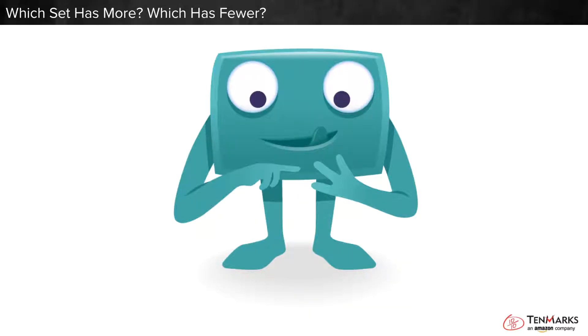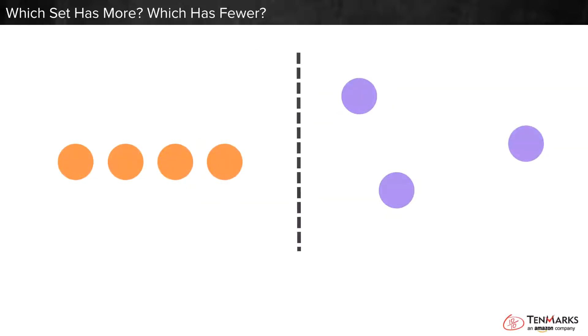Let's compare sets of objects to learn about more and fewer. Here are two groups of dots. We want to compare the number of dots to see which group has more and which has fewer, or less.